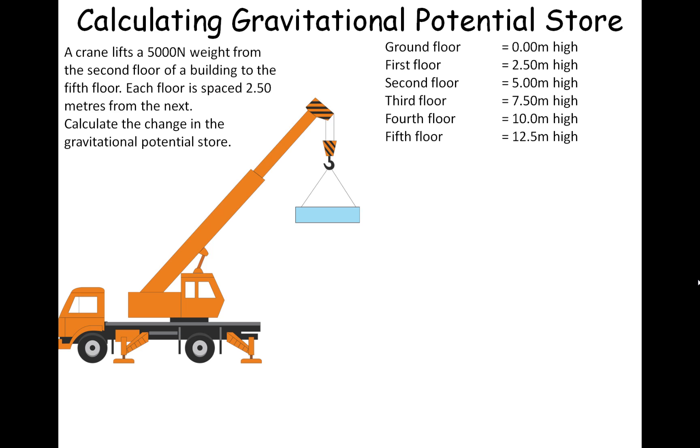So if the ground floor is at 0 meters, we've got our first floor at 2.5, second floor at 5, third floor at 7.5, fourth floor at 10, and fifth floor at 12.5.